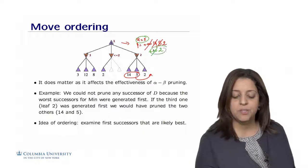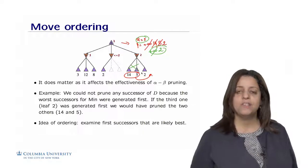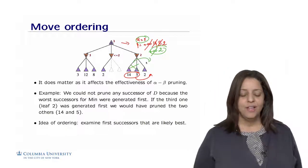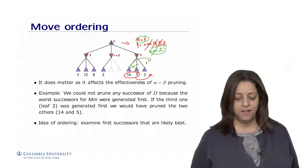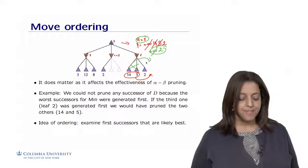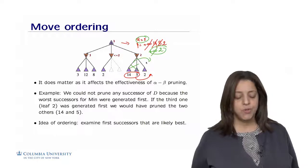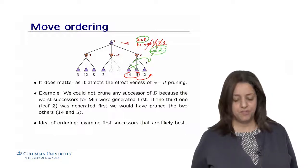And then since alpha is greater or equal than 2, then we could have dropped these two nodes if they were, assuming they were actually on the other side of the children of node D. So we could not prune any successor of D because the worst successors were actually generated first.